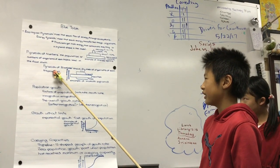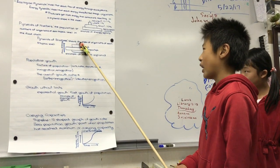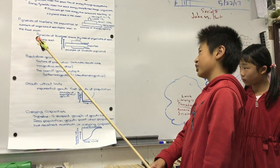And another one is a pyramid of biomass, which shows dry mass of organisms at each trophic level.